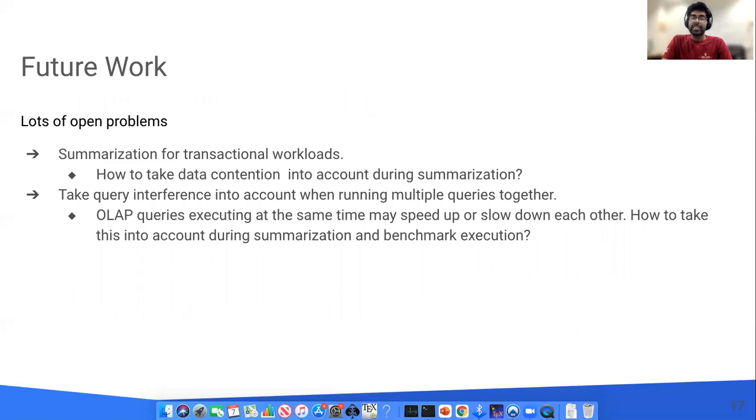There are lots of exciting problems that remain unsolved. The first is how we can perform summarization for transactional workloads. This is challenging because we need to take the data contention into account. The second exciting problem is how to take query interference into account, which is common when analytical queries are run in the cloud. In this case, the queries may run faster or slower depending on which queries execute concurrently, which makes this problem challenging.